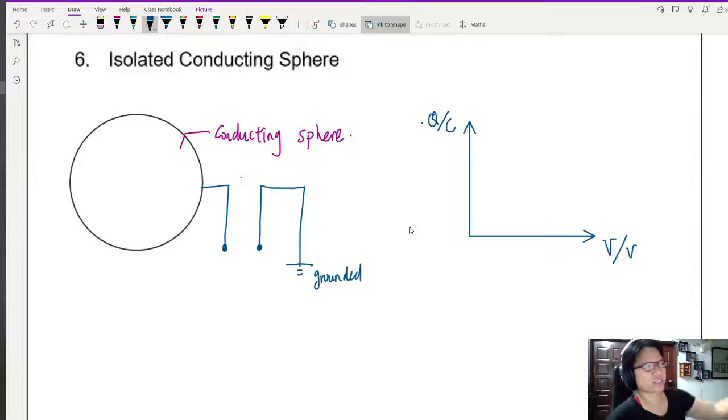So here you see that there is an isolated conducting sphere. This is not the first time we've seen this sphere before.